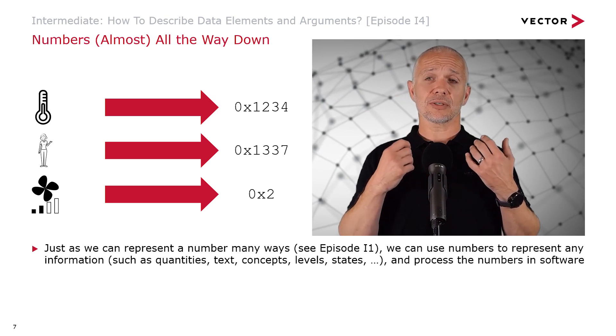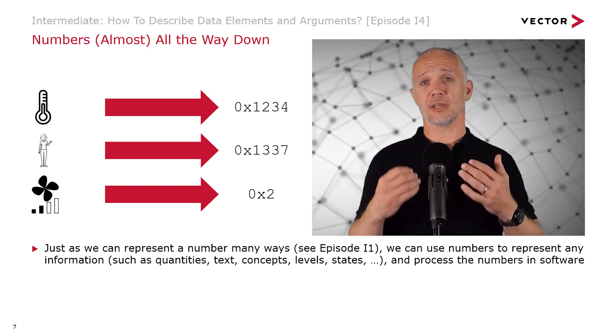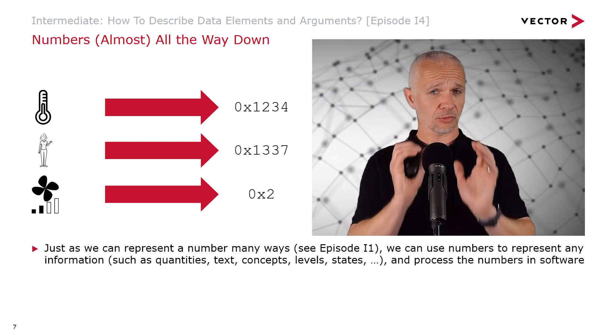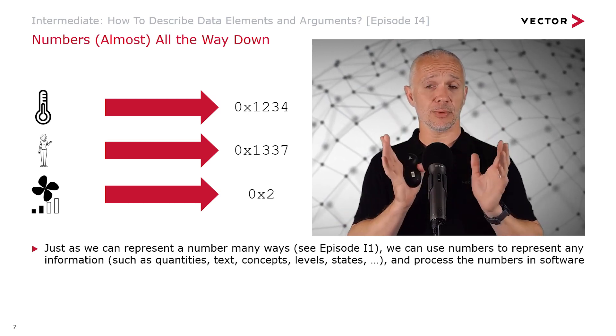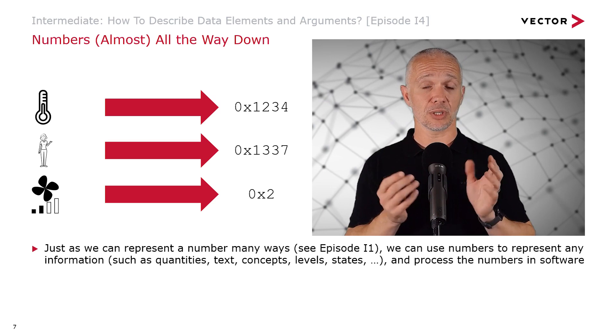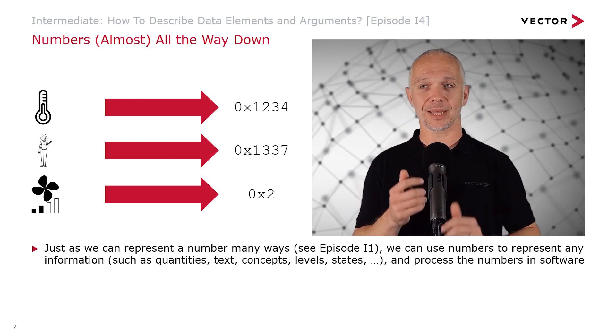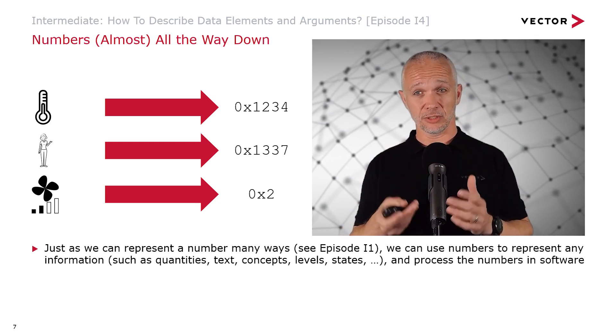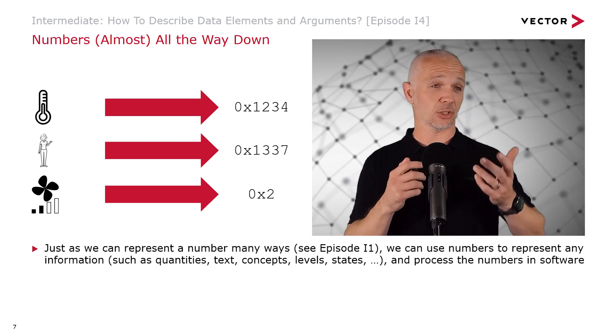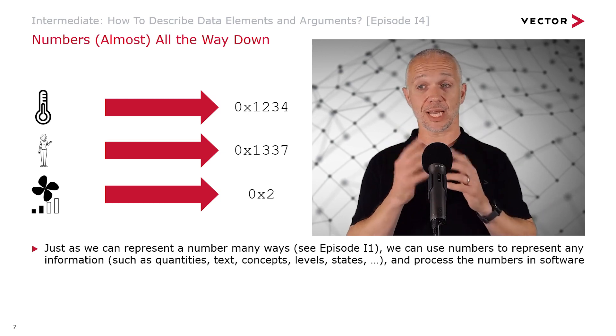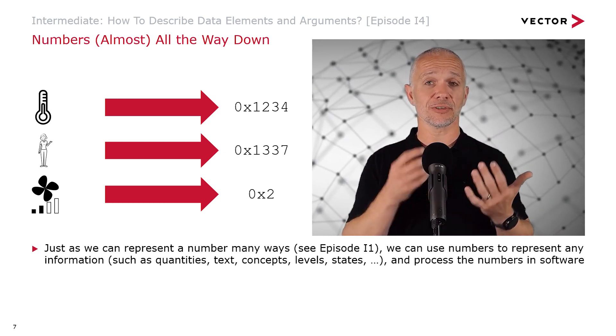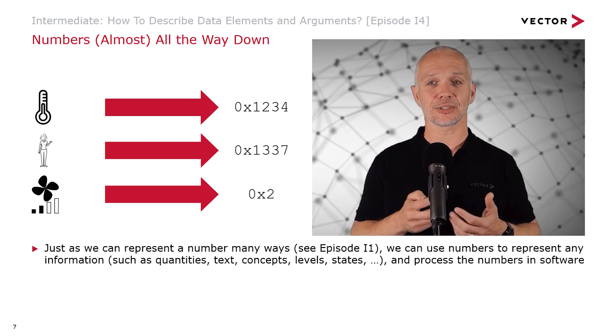When we think about software, we have to think what we're going to be working with is numbers almost all the way down. And just as we can represent a number in many ways, and see episode I1 if you want to know more about that, we can use numbers to represent any information such as quantities, text, concepts, levels, states—any information. And once we've got that information in the form of a number, we can process it in software.